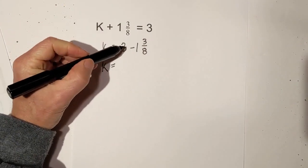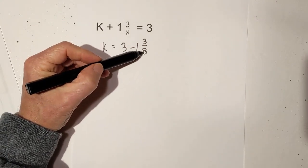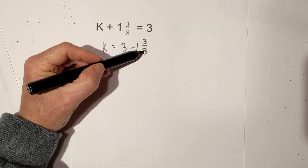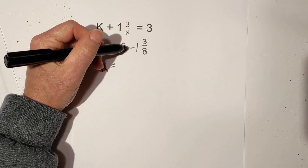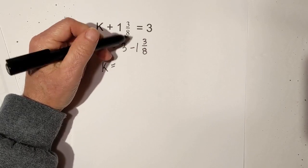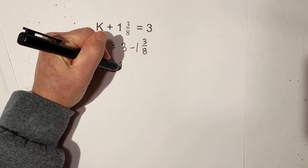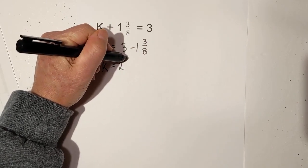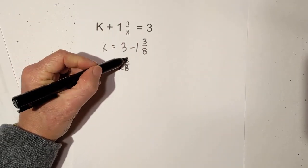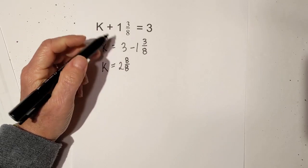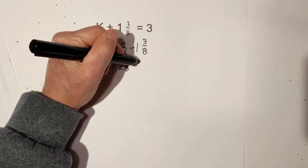Notice how we're at the point where it's 3 minus 1 and 3 eighths. What you do is look at the denominator of this fraction. A number over itself is 1, so I'm going to take 1 from the 3, making it 2, and then put 8 over 8 because 8 over 8 is 1 and 2 plus 1 is 3. Then we just subtract.